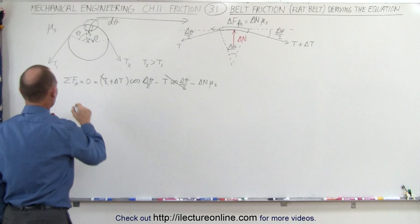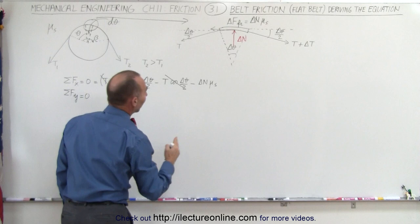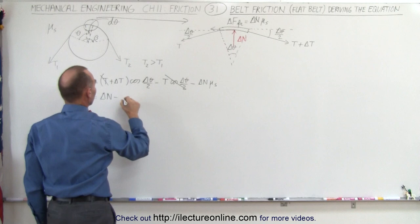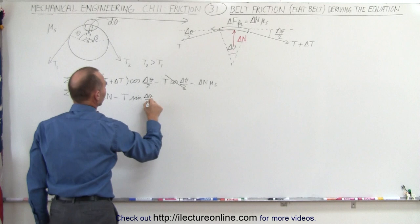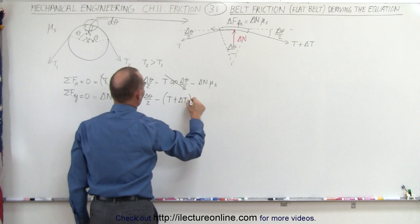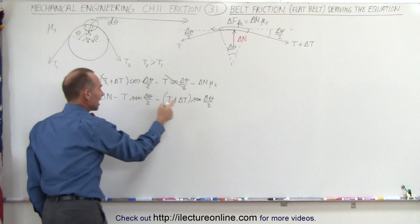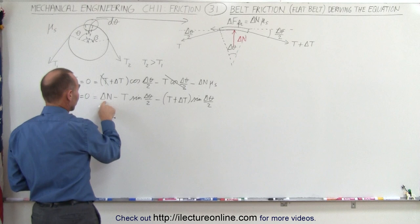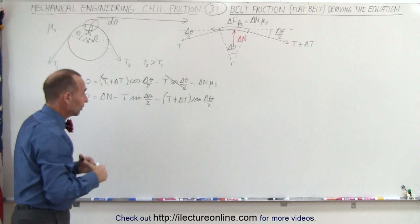Now we add up all the forces in the y direction, which also equal zero. The force upward is delta N, minus the two downward tension components: minus T times sine of delta theta over 2, and minus (T + delta T) times sine of delta theta over 2, all adding to zero. We're going to solve the second equation for delta N and substitute it in, eliminating that unknown.